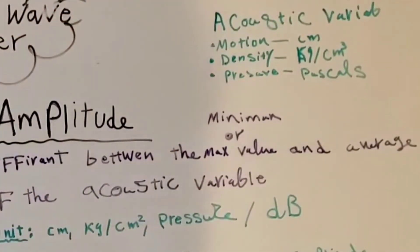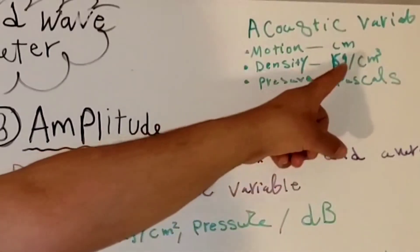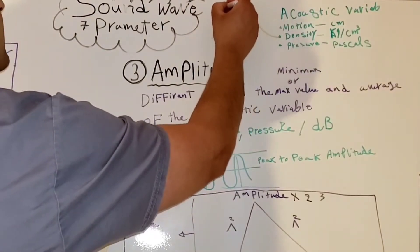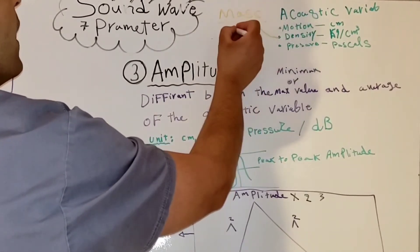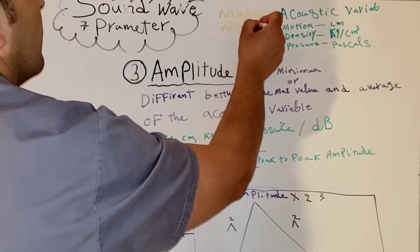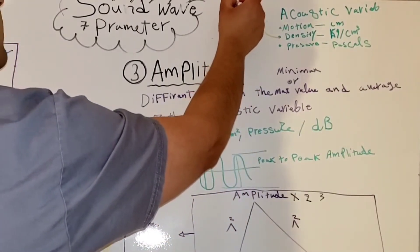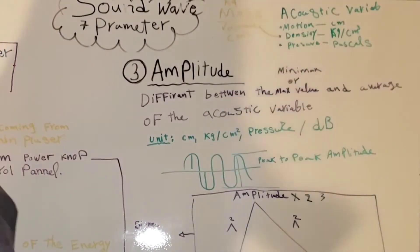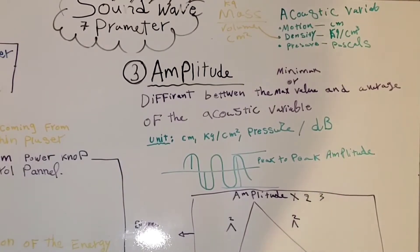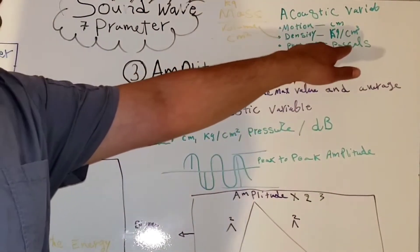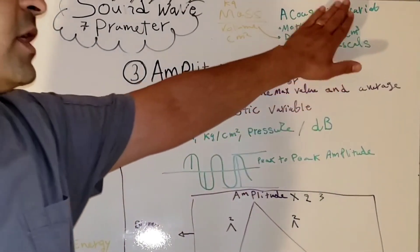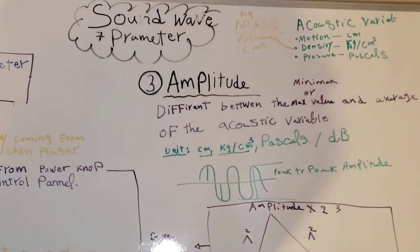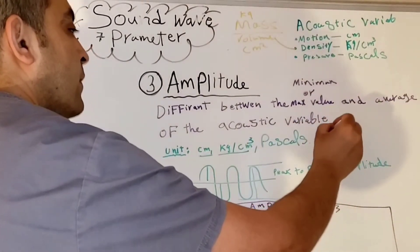The unit for motion is centimeters. The unit for density is kilograms per cubic centimeter, because density equals mass divided by volume — the unit for mass is kilograms and the unit for volume is cubic centimeters. For pressure, we use Pascals. We can use all these units — centimeters, kilograms per cubic centimeter, or Pascals — for the amplitude.